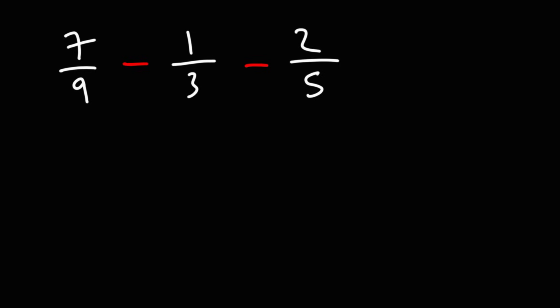So let's find a common denominator. Now, we could multiply all three fractions. We'll get 9 times 5 is 45 times 3 is 135. But notice that 3 goes into 9. So we really don't need to use a 3. If we multiply 9 by 5, we'll get a common denominator, which is 45.